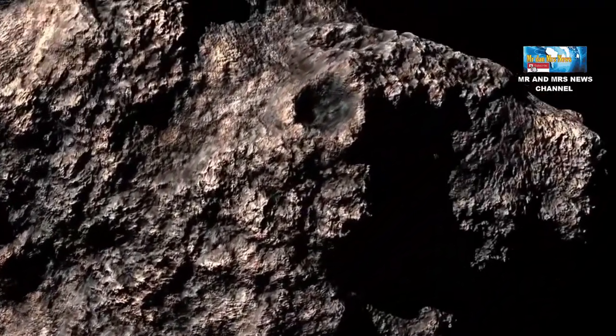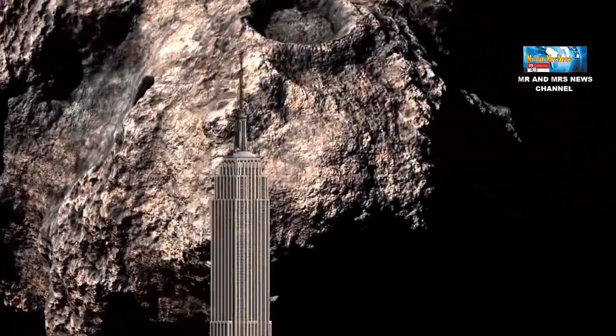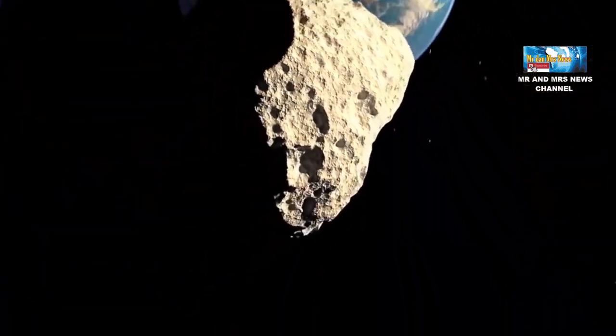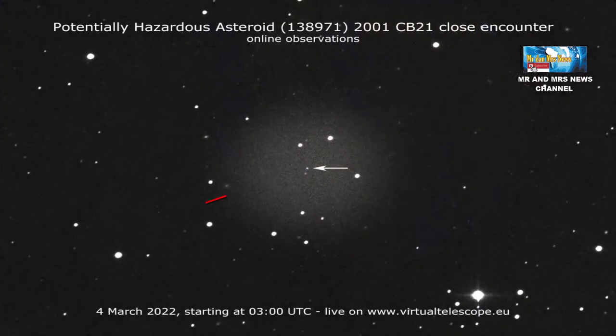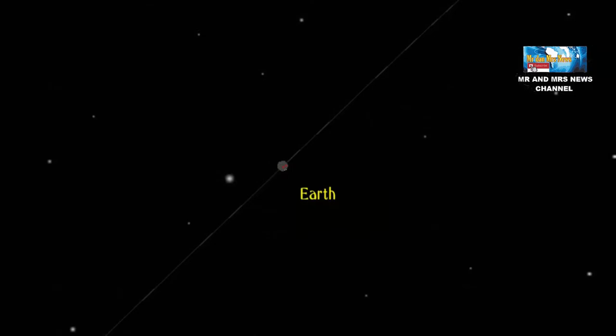The space rock with code 138971, named 2001CB21, will pass Earth on March 4, 2022. The most surprising thing is the size of this asteroid itself.